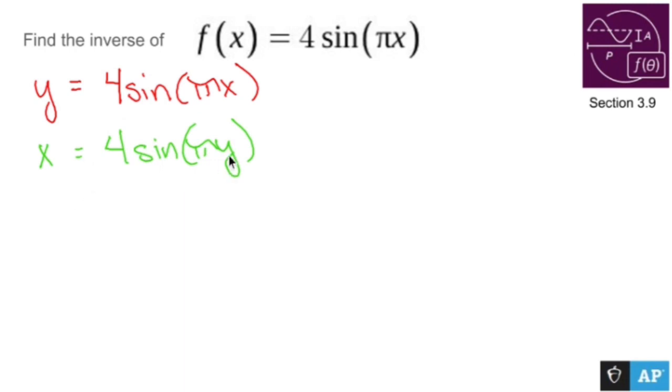Now, I have to get y all by itself. First things first, let's get rid of that four by dividing everything by four. So divide by four, divide by four, and now I have x/4 = sin(πy).